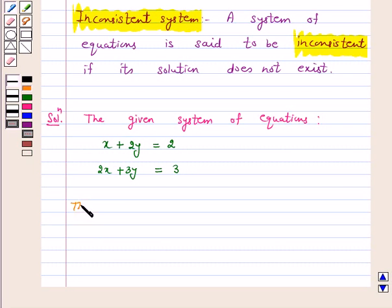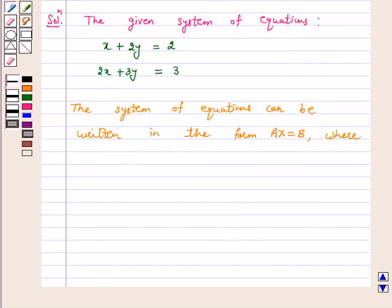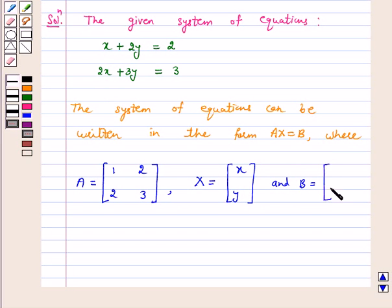The above system of equations can be written in the form Ax equals B where A equals the matrix [1, 2; 2, 3], x equals the vector [x; y], and B equals the vector [2; 3].